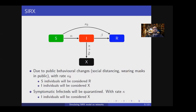Except from the typical processes governing the spread of infection — such as transmission to a new individual and recovery — the model also includes quarantining. Due to quarantining, individuals will be removed from the transmission process. The changes in public behavior, such as social distancing or wearing masks, will affect the susceptible S and quarantined X populations. With rate Kappa zero, S individuals will be considered R, and I individuals will be considered X. With rate Kappa, symptomatic I individuals will be considered X.